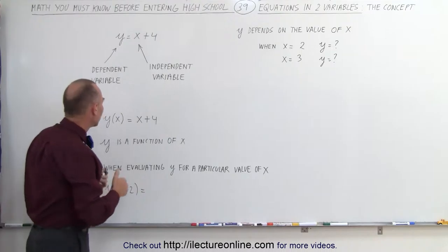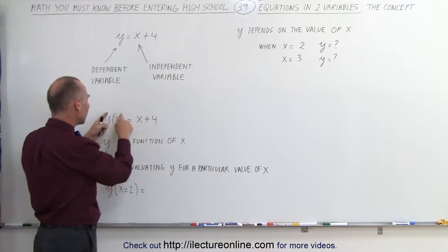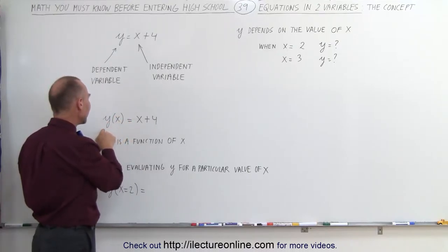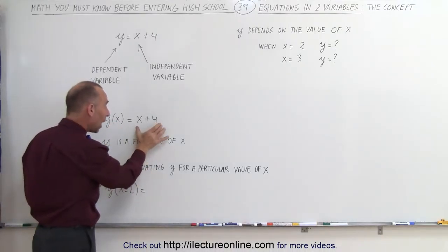Another way of writing that is as follows. We can say y is a function of x. And then we can write as y with parentheses and put the value of x in there. This indicates that this variable y depends on this variable x. And this is how it depends on it.